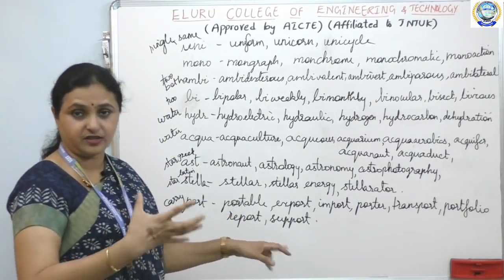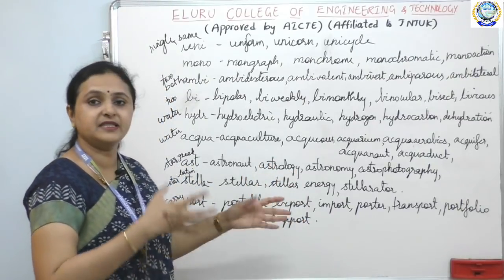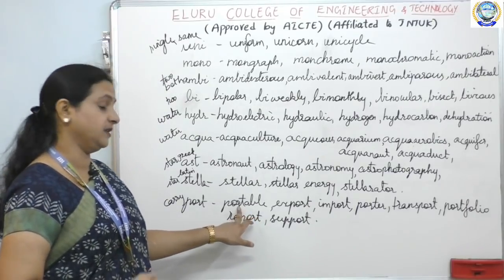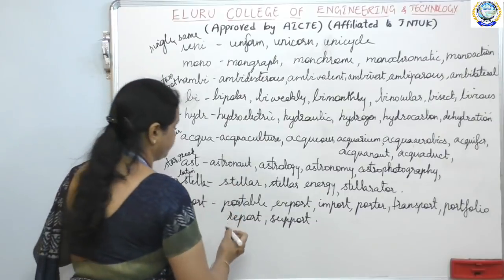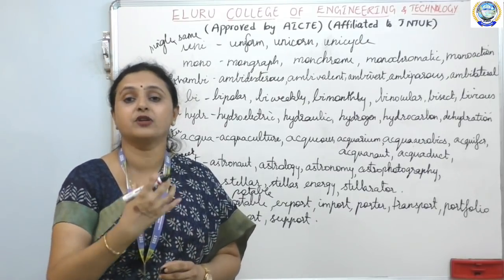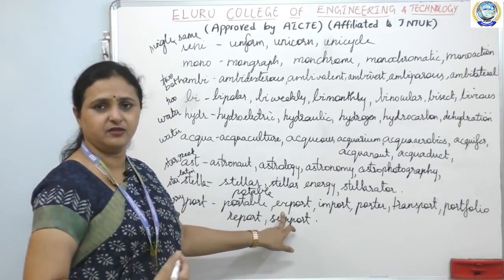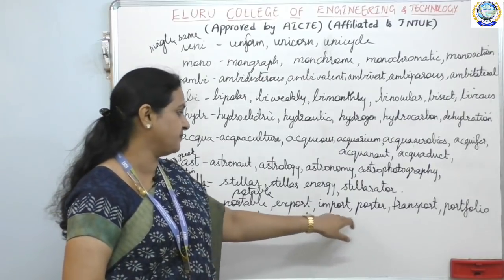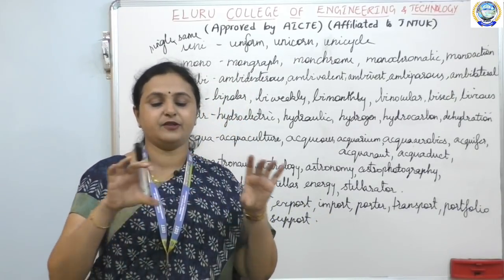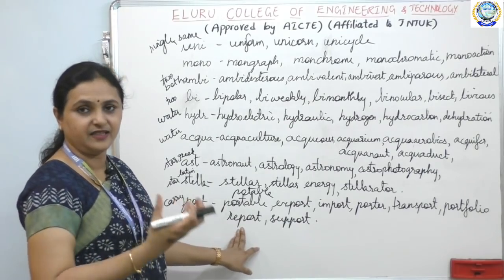Port means to carry. That's why we get porter — someone at a railway station who carries your goods. Portable — something that can be carried from one place to another. Potable — P-O-T-A-B-L-E — something that you can drink or consume, like potable water. Export — carry outside. Import — bring inside your country. Transport — moving from one place to another. Portfolio — a file that carries all papers and sheets. Report — that which carries some information.